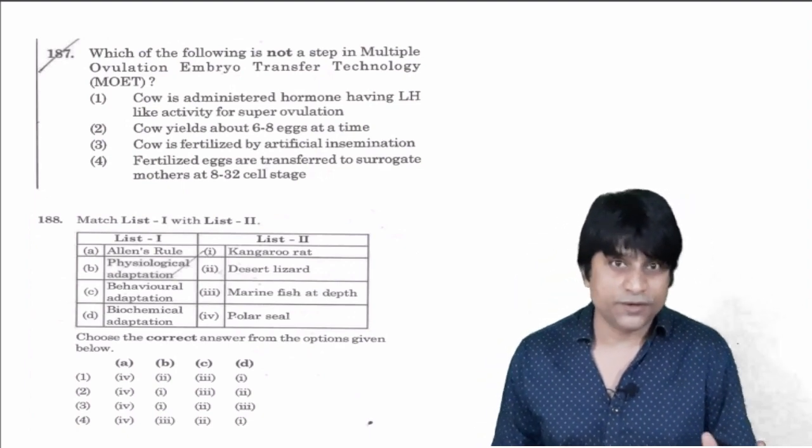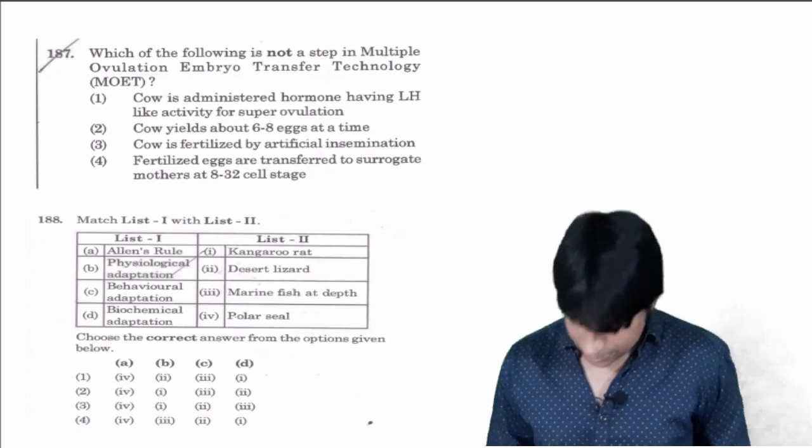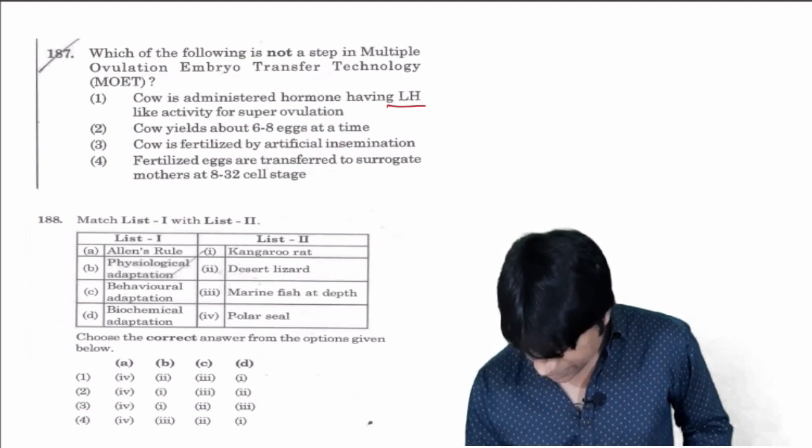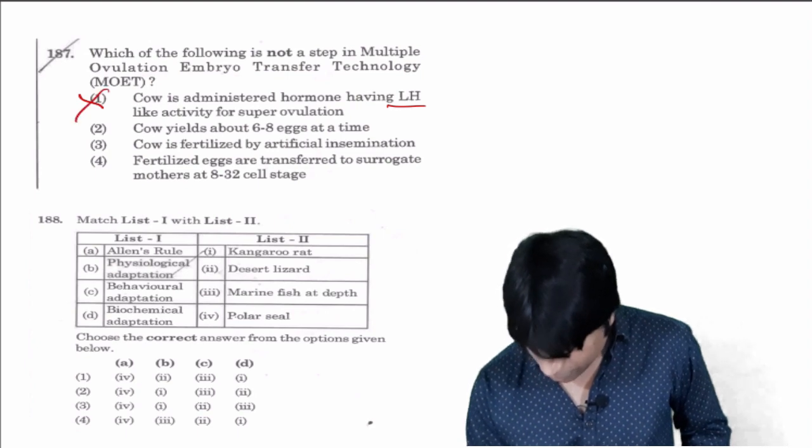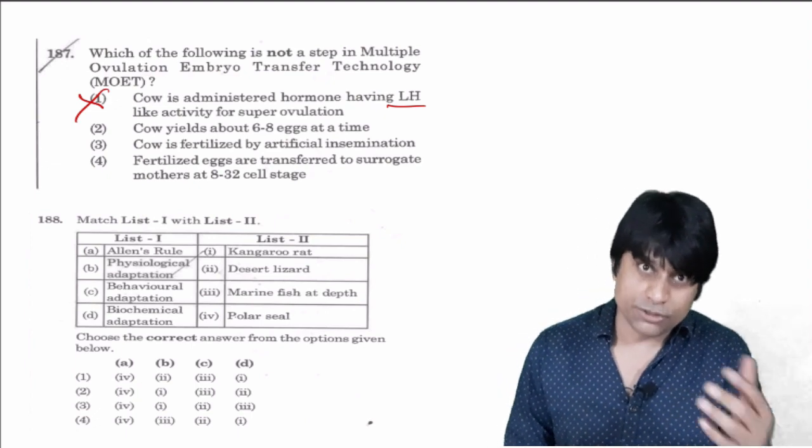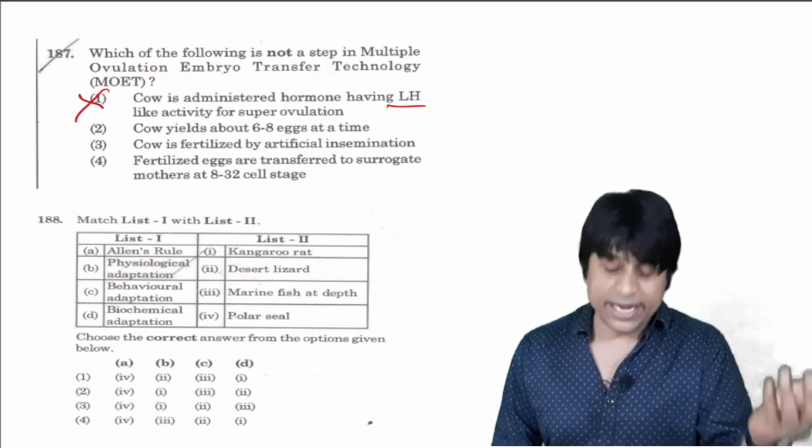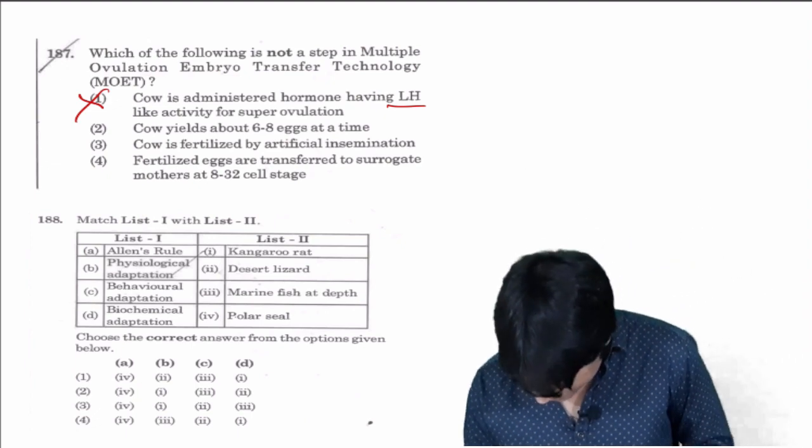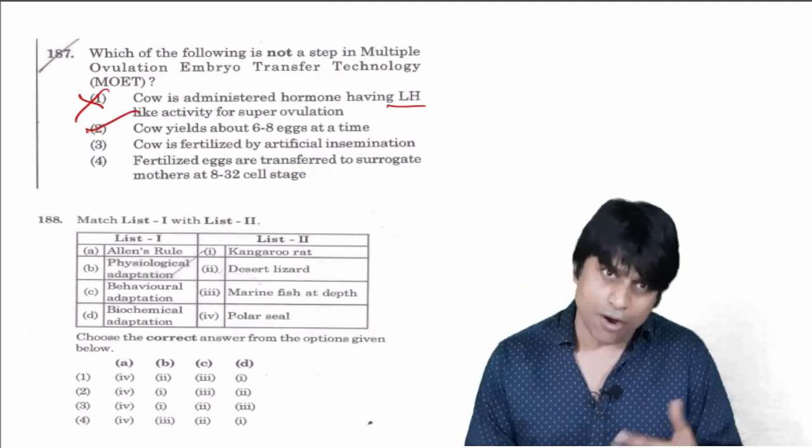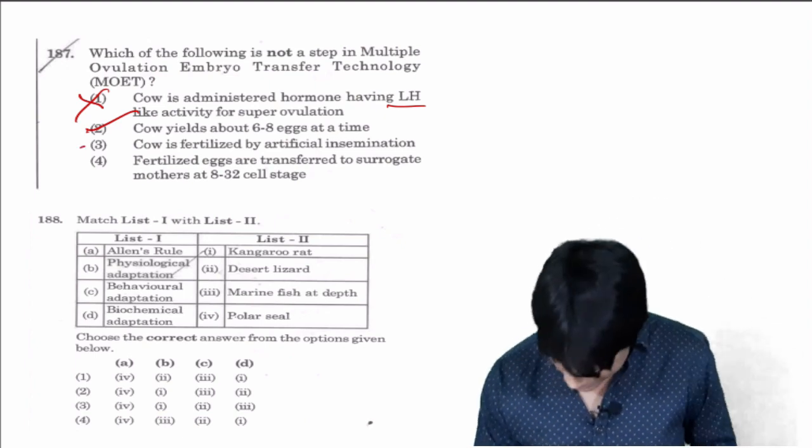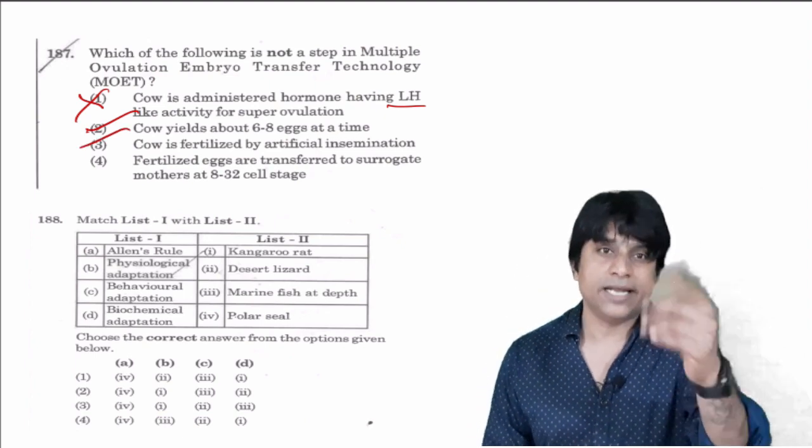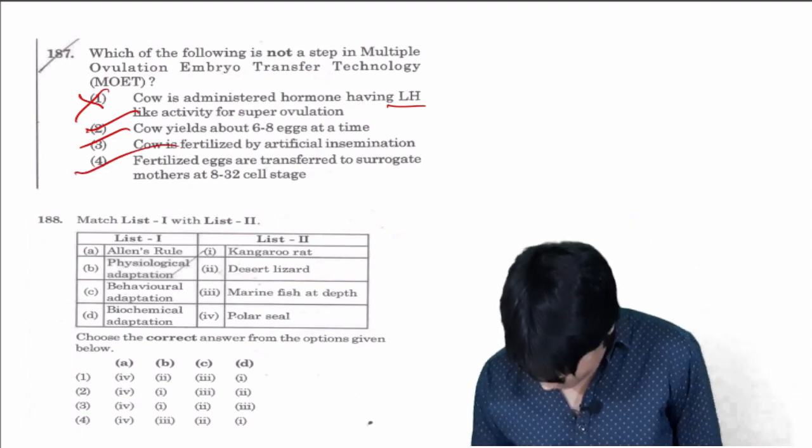Which of the following is not a step in Multiple Ovulation Embryo Transfer technique? The cow is administered hormones having LH-like activity, this is wrong. FSH-like activity which stimulates the maturation of follicles so that six to eight eggs are produced. Cow produces six to eight eggs, correct. Cow is fertilized by artificial insemination, correct. Fertilized eggs are transferred to surrogate mother at eight to thirty-two cell stage, this is also right.